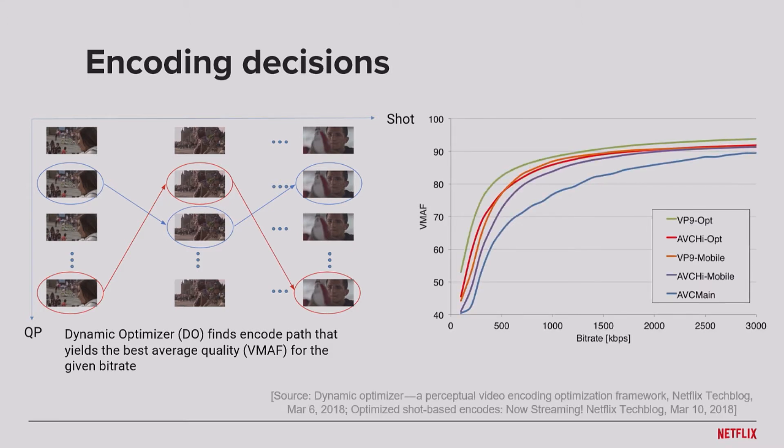By doing that, we'll be able to construct very similar diagrams like these. As you can see, there are different colors representing different codecs combined with whether you're applying Dynamic Optimizer optimization or not. For example, for VP9, even for the same codec, the green curve shows it's pushing the boundary of this rate-distortion curve compared to, for example, the orange one, which does VP9 Mobile and doesn't do this DO optimization. So you can see there is still space for the boundary to be pushed that this framework can bring you benefits.